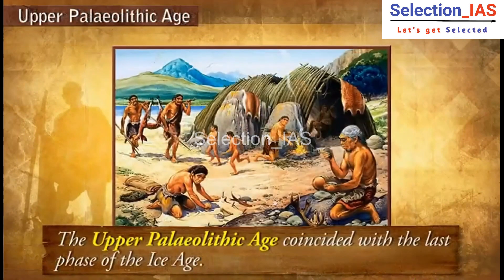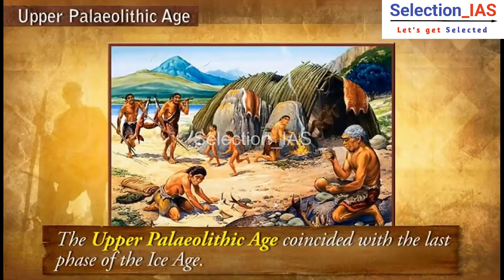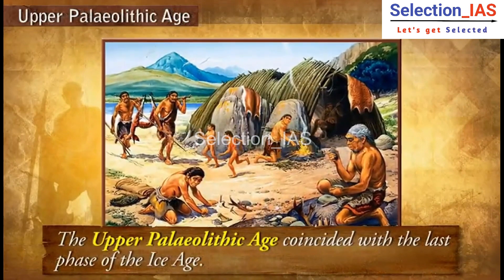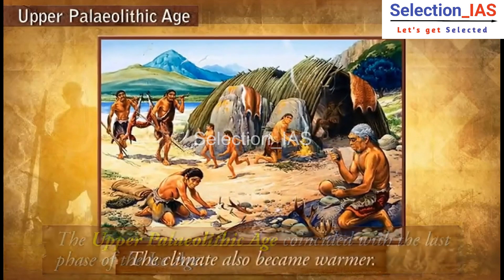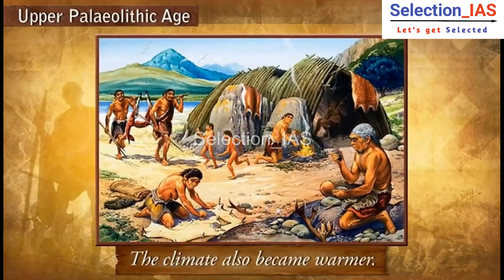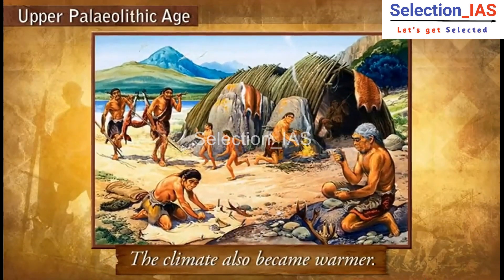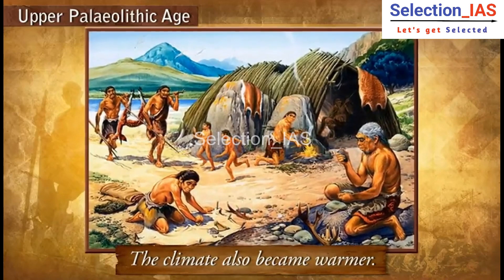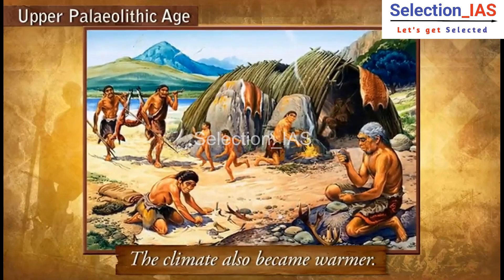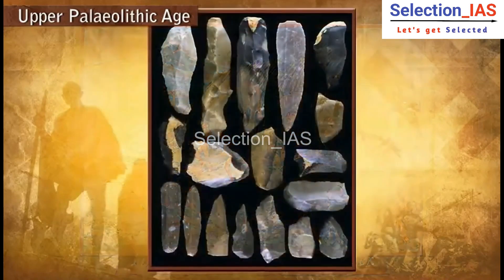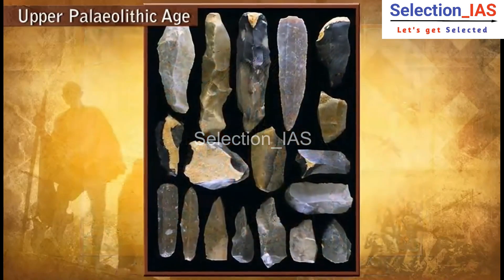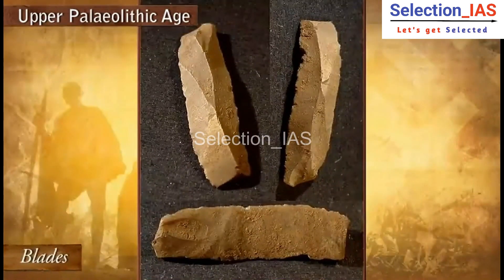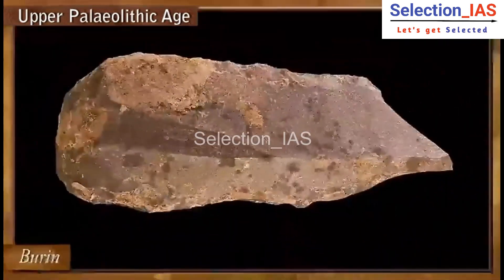The Upper Paleolithic Age coincided with the last phase of the Ice Age, and the climate also became warmer. Tools used in the Upper Paleolithic Age were blades, burins, and scrapers.